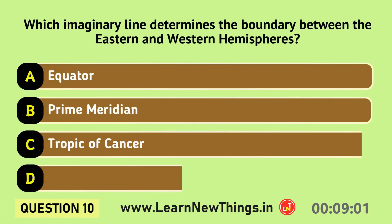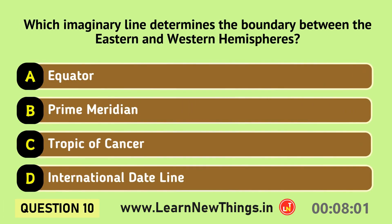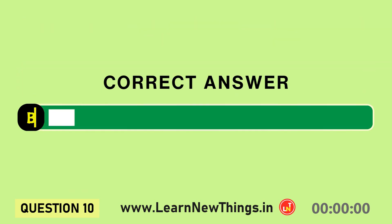Which imaginary line determines the boundary between the eastern and western hemispheres? Prime Meridian.